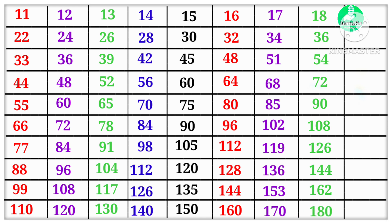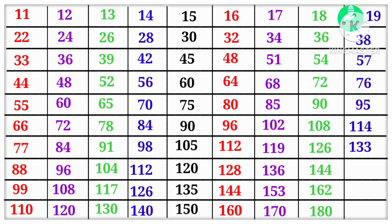18 10s are 180. 19 1s are 19, 19 2s are 38, 19 3s are 57, 19 4s are 76, 19 5s are 95, 19 6s are 114, 19 7s are 133, 19 8s are 152, 19 9s are 171, 19 10s are 190.